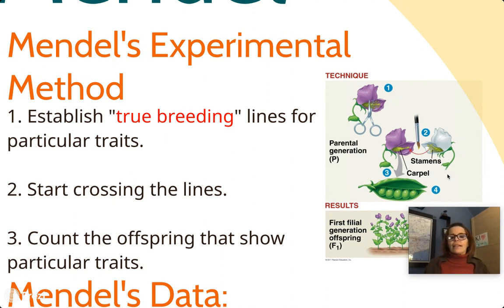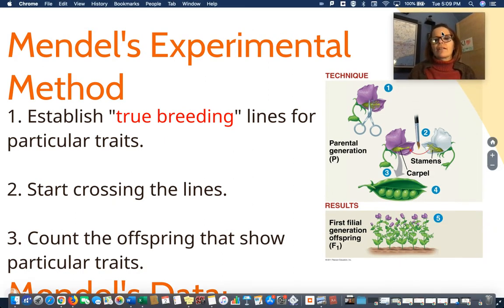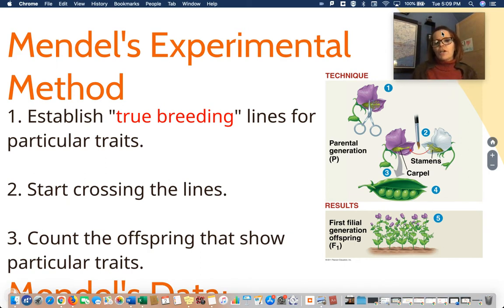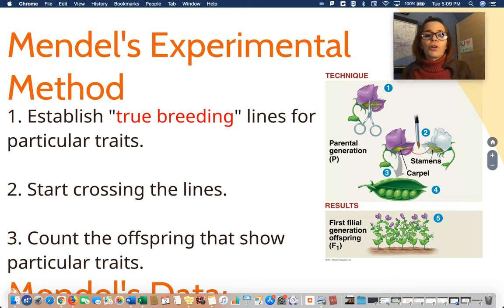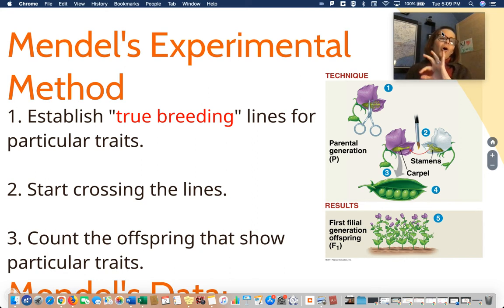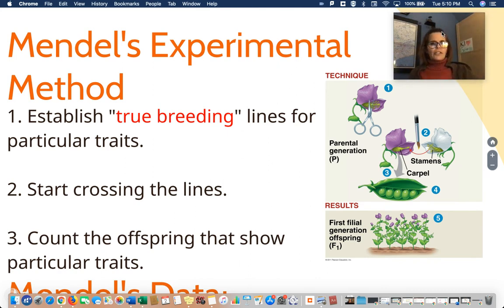Things he did that were super unique: first, he started what are called true breeding lines. He mated certain plants over and over and over again to make sure he always got a particular trait. For the trait purple flower, he mated purple with purple with purple, and eventually he ended up always getting 100% purple offspring — generation after generation. Those are true breeding lines where they only produce their particular flower color.